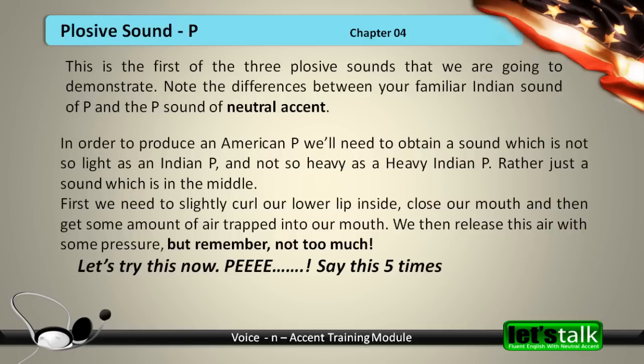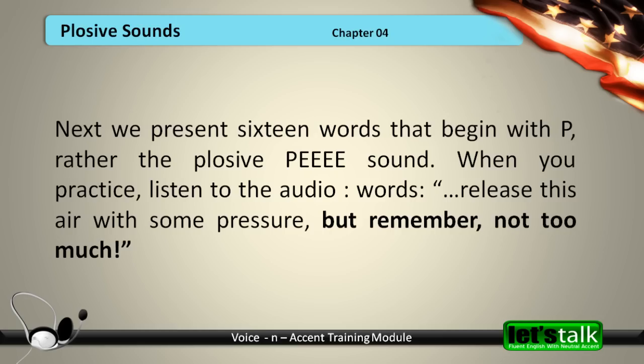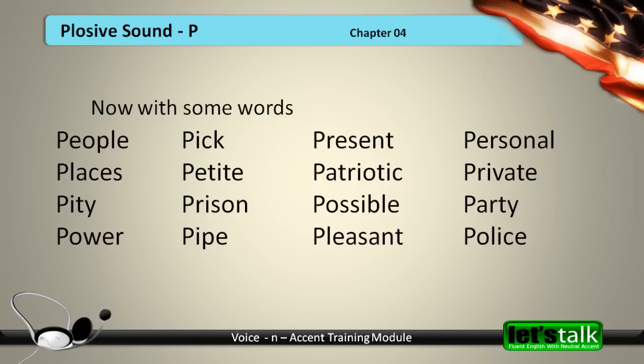First, we need to slightly curl our lower lip inside, close our mouth, and then get some amount of air trapped into our mouth. We then release this air with some pressure, but remember, not too much. Let's try this now — P. Say this five times. Next, we present sixteen words that begin with the plosive P sound. When you practice, listen to the audio words and release this air with some pressure, but not too much. Now let's practice the plosive P sound with some words.